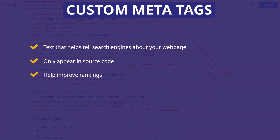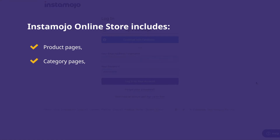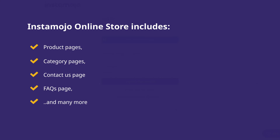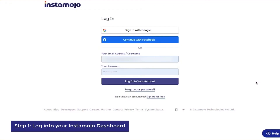Your Instamojo store has multiple pages apart from its homepage, such as product pages, category pages, contact us page, FAQs page, and much more. Each of these pages has a unique URL, and therefore each of these pages should have the basic SEO settings defined for them. In order to set those up, follow these steps.